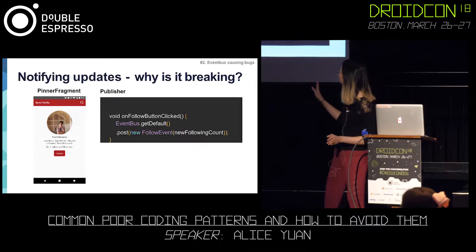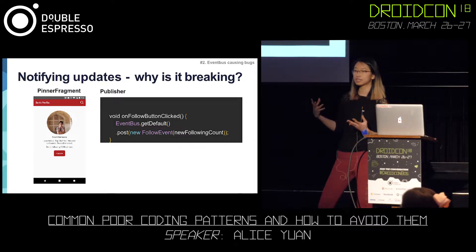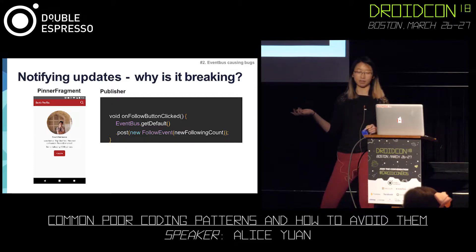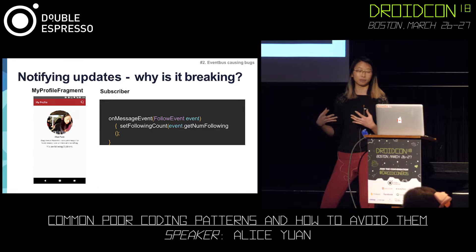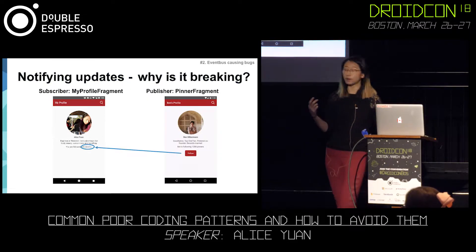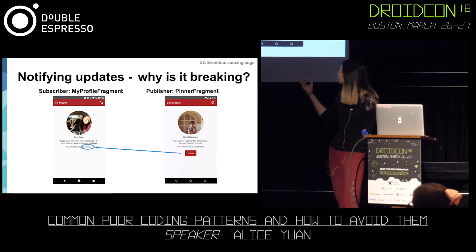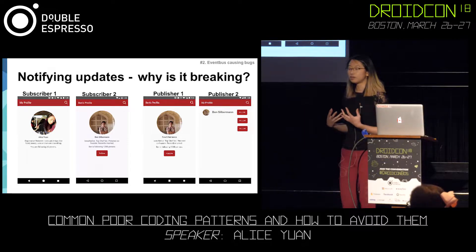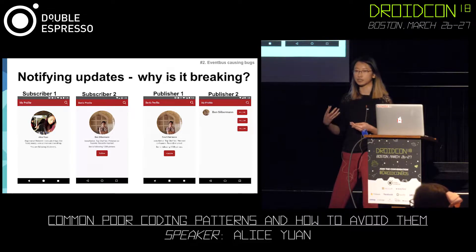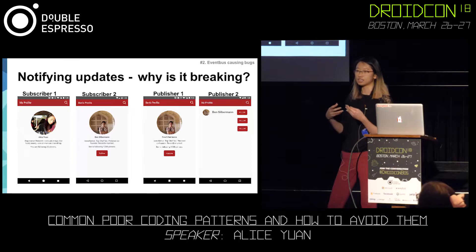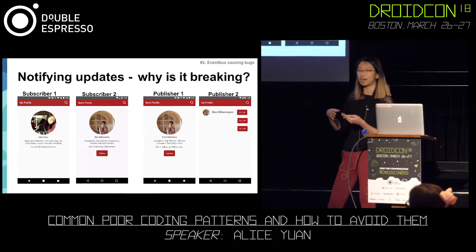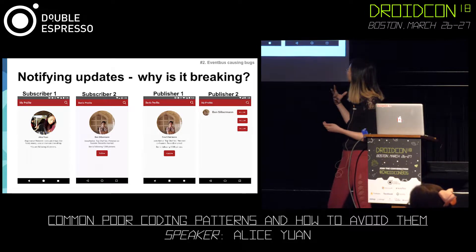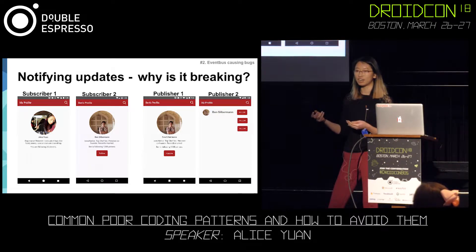The code looks very simple. We have the follow button and when we use event bus, we just create this new event saying the follow button has changed and we have a new following count. On the other side, we receive that event and update the following count. But as we add more fragments, it breaks. The reason is that there are different life cycles tied to these fragments and also different conditions under which we're sending those events. I might be sending events because the follow button has changed, but that condition might not apply in the same way to another fragment. On the subscriber side, we don't know whether the subscriber is actually alive during the time the event is sent.